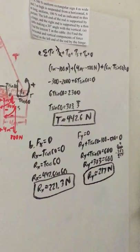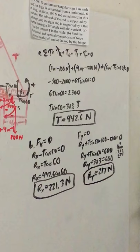So the vertical component of the force exerted on the left end of the rod by the hinge is 217 newtons. So let's just write that.